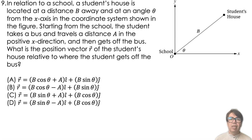Starting from the school, the student takes a bus and travels a distance A in the positive x-direction and then gets off the bus. What is the position vector r of the student's house relative to where the student gets off the bus?